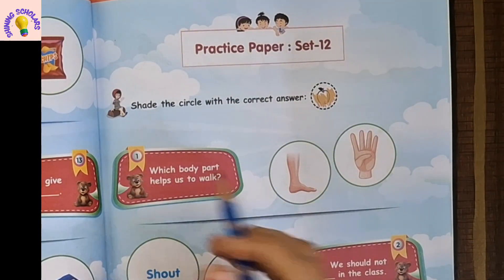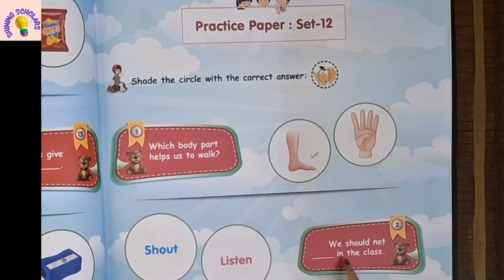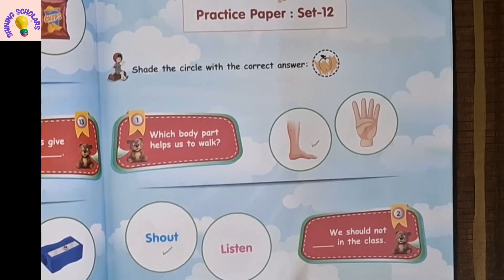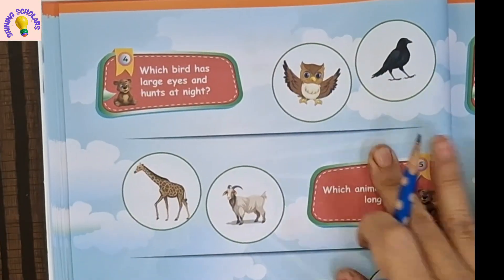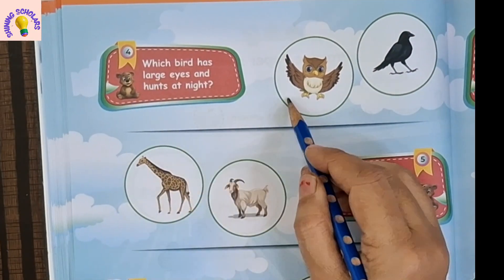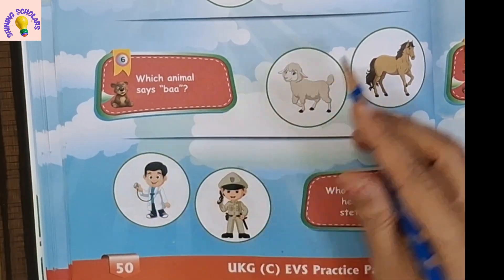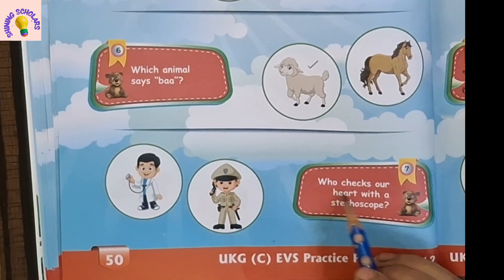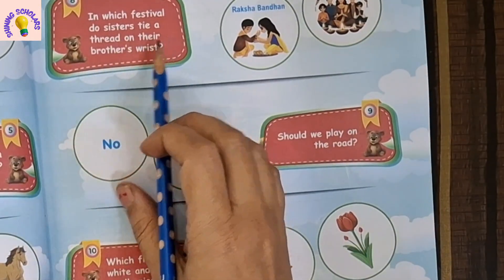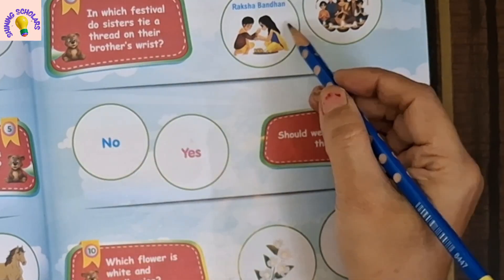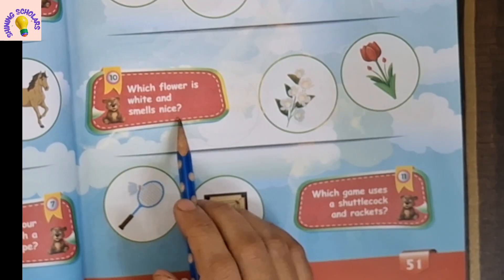Next set is set 12. First question: which body part helps us to walk? It's the legs and feet. We should not shout in the class. Which of these is orange in color? Orange is orange in color. Next question: which bird has large eyes and hunts at night? It's an owl. Which animal has a long neck? It's a giraffe. Which animal says baa? It's the sheep. Who checks the heart with a stethoscope? It's a doctor. In which festival do sisters tie a thread on their brother's wrist? It's Raksha Bandhan. Should we play on the road? No.